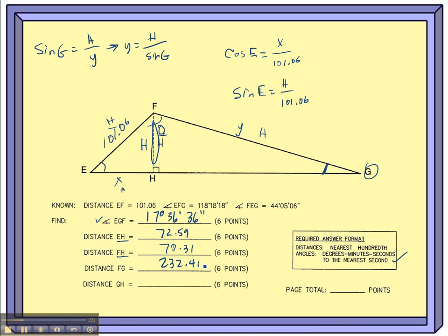232.40. The question is, do I have to write that zero down if it's a zero in the hundredths place? I'm going to say, yeah, why don't you go ahead and do that.